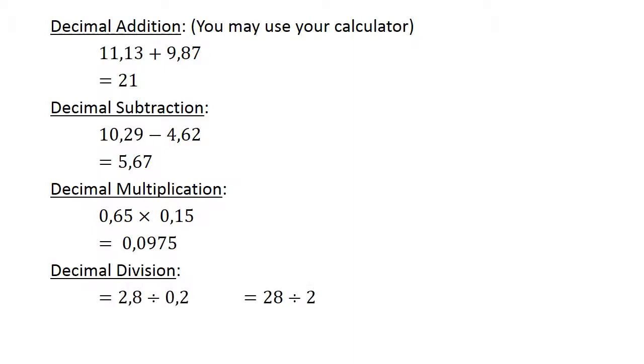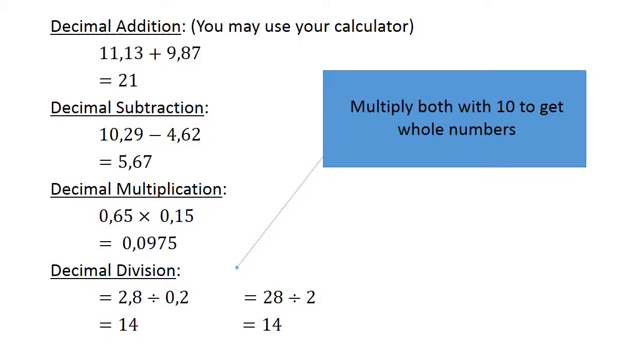Decimal division. 2.8 divided by 0.2. Multiply both with 10 to get whole numbers. 28 divided by 2 equals 14.